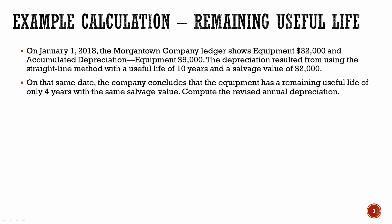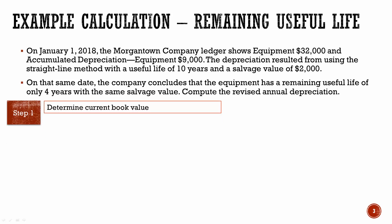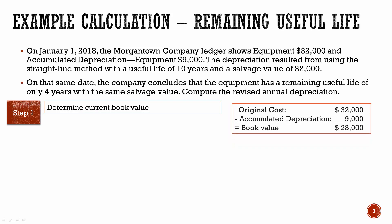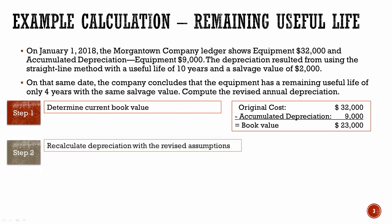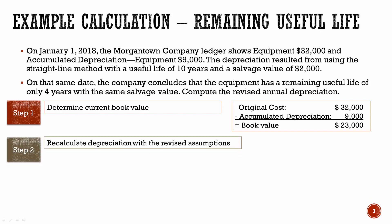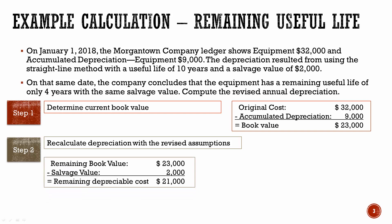What we need to do here is step one: determine the current book value. Our problem tells us that the equipment original cost was $32,000, accumulated depreciation is $9,000, and so the book value is $23,000. Now that we have the book value on the date of the revision, we can recalculate depreciation from now forward using our new assumptions. We're going to take that remaining book value and subtract out the salvage value to determine the remaining depreciable cost of $21,000.